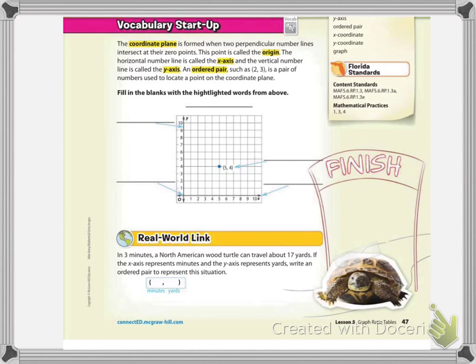If we're looking at the first page, page 47, what we want to do is since we're working with graphing ratio tables today, it's important for you to know the parts of a coordinate plane. So what you see here in the middle, this guy right over here, this is called a coordinate plane. So go ahead on that top line and write in coordinate plane.